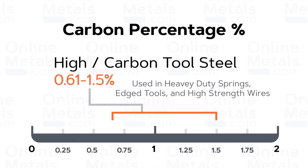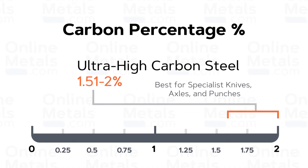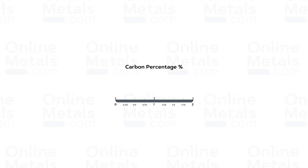High or carbon tool steel generally has a range of 0.61 to 1.5 percent carbon. This material is extremely hard and brittle, and because of this it's very difficult to bend, weld, or cut. Lastly, ultra-high carbon steel has a carbon content ranging from 1.51 to 2 percent and can be heat treated to exceptional hardness. Specialist knives, axles, and punches are typically made from ultra-high carbon steel.